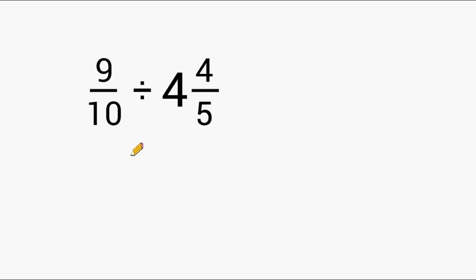In this example the first value is a fraction and we are just going to rewrite that fraction. And the second value is a mixed number. So we have to divide 9 tenths by 4 and 4 fifths.